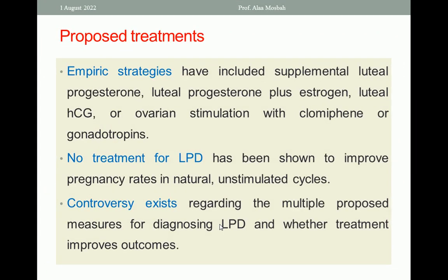Empiric strategies include supplemental Luteal progesterone by giving progesterone either suppository, injection, or oral during the Luteal Phase; or Luteal progesterone plus estrogen; or Luteal HCG injection during the Luteal Phase; or ovarian stimulation with clomiphene citrate or gonadotropins.